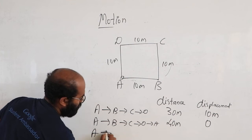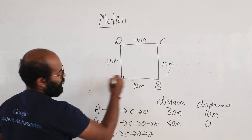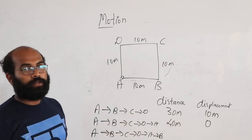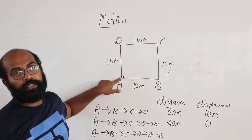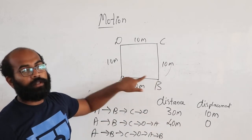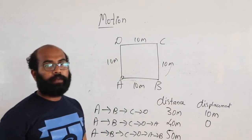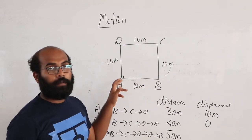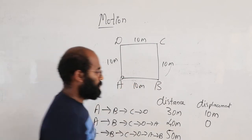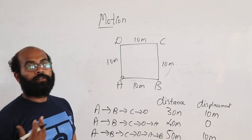Next: from A I go to B, C, D, back to A — that completes one rotation with a distance of 40 meters — and then I go again from A to B. So the total distance is 40 plus 10, which is 50 meters. The displacement is the difference between the initial and final point. The initial point is A and the final point is B, so the displacement is 10 meters.